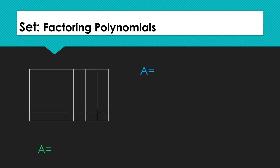In the Set section, you're factoring polynomials by rewriting each given expression as a product of two linear factors. In today's task, we develop the use of an area diagram to support factoring certain polynomials.